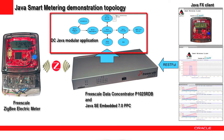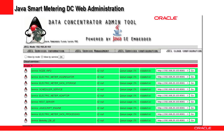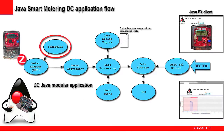The Java smart metering application has nine loosely coupled components. These components can be managed by the data concentrator web admin tool. The nine components communicate by exchanging asynchronous messages. The message flow is as follows.